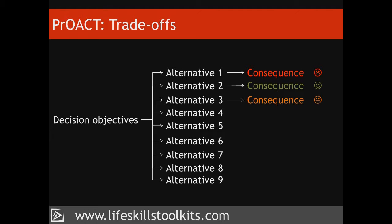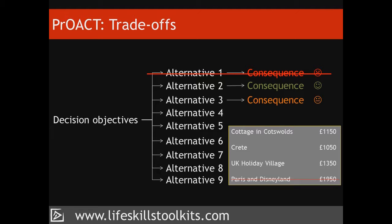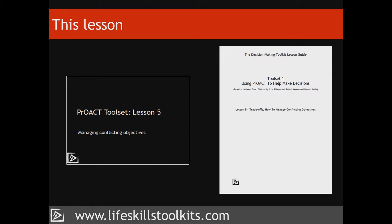In the last lesson, Consequences, we identified a series of consequences based on the decision objectives and alternatives that we had defined in the previous steps of the PROACT process. As part of the Consequences step, we eliminated those alternatives that were clearly inferior when compared to the others. For example, you may remember the Petersons eliminating their holiday to Paris and Disneyland because the overall cost exceeded their budget. Being able to eliminate one alternative based on a single decision objective is unusual, because complex decisions involve multiple decision objectives. This lesson describes the different ways to eliminate your alternatives until you are left with a final alternative on which to base your decision, and consists of this presentation together with a lesson guide to help you manage any conflicting objectives you may encounter.